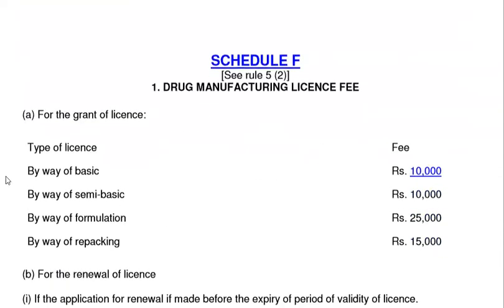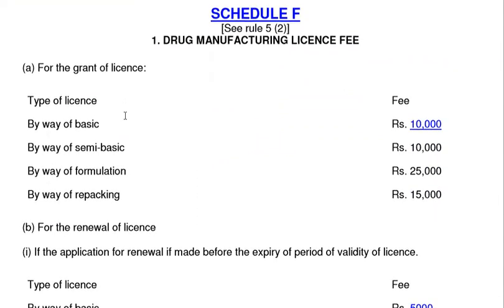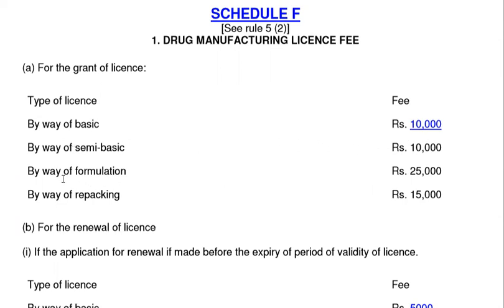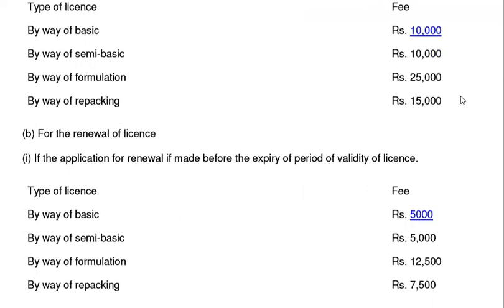Schedule F covers the Drug Manufacturing License. Types of license and fees: Basic license fee is 10,000; Semi-basic license fee is 10,000; Formulation license fee is 25,000; Repacking license fee is 15,000. For renewal of the license, if the application is made within the expiry date of the validity of the license, the fee is: Basic 5,000; Semi-basic 5,000; Formulation 12,500; Repacking 15,500.